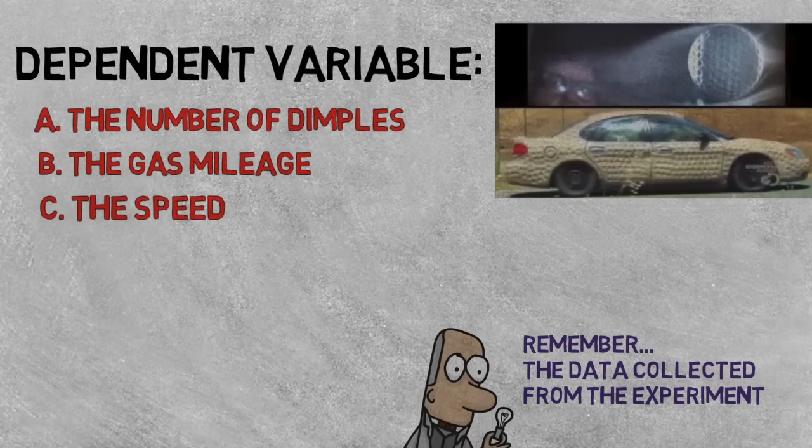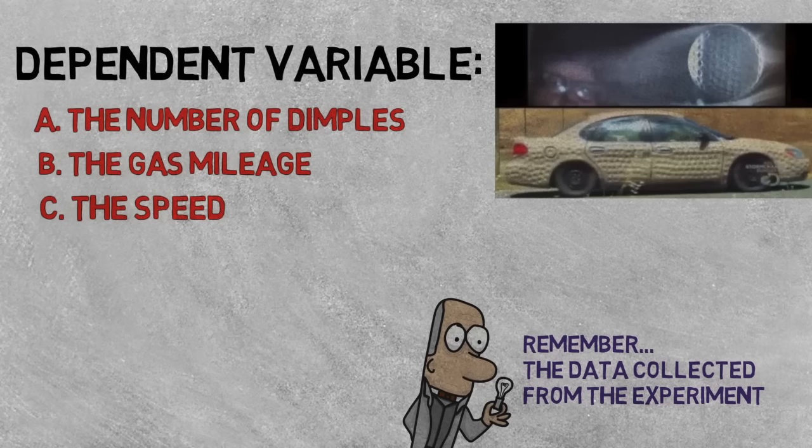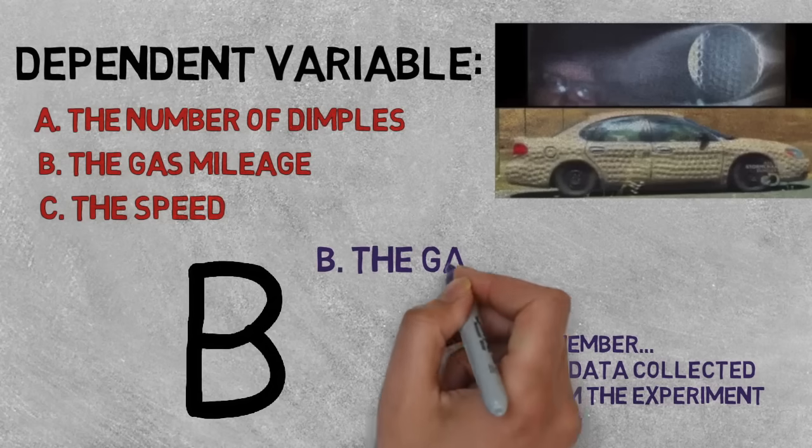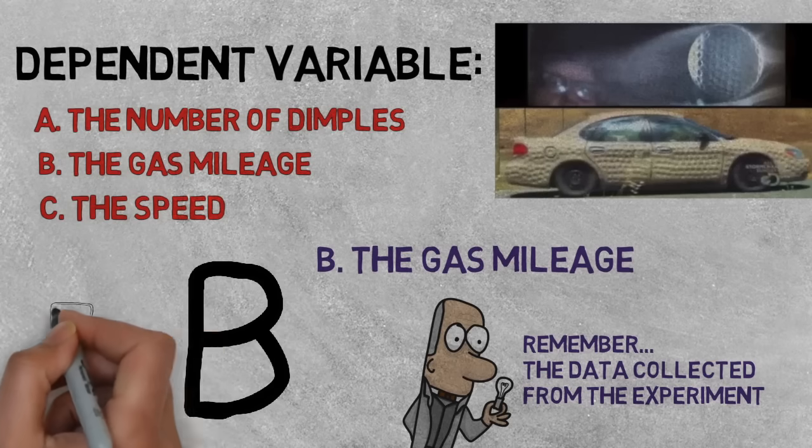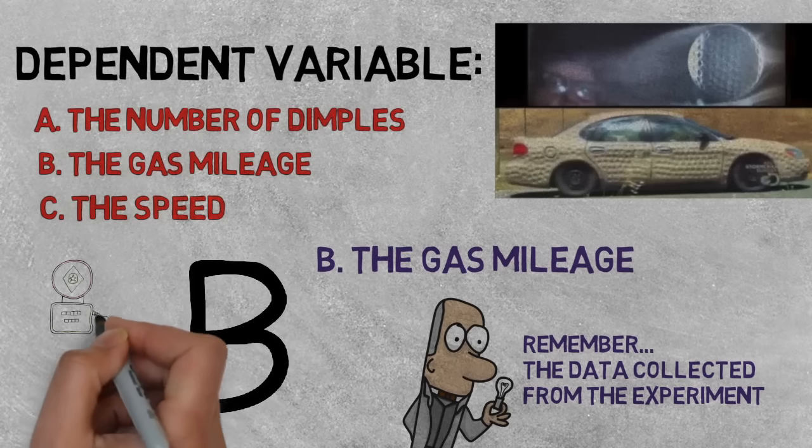Remember the dependent variable is the data collected from the experiment. The correct answer is B, the gas mileage, because it was thought that the gas mileage would depend on whether the car had dimples in it or not.